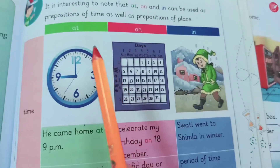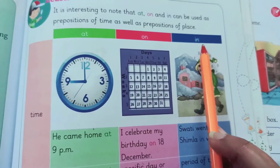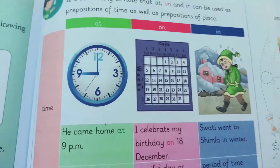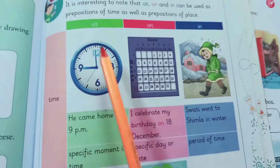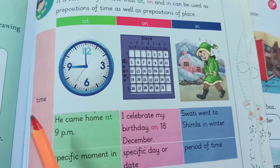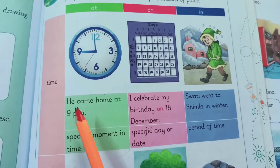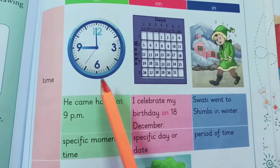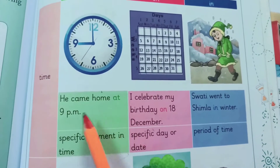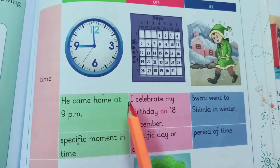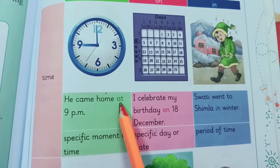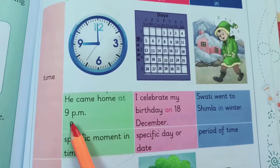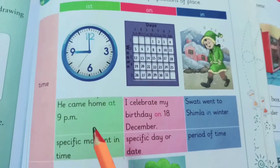These three prepositions are used for time and place. 'At' is used for a specific moment in time. For example: He came home at 9 p.m. — here we have used 'at' because 9 p.m. is a specific time.